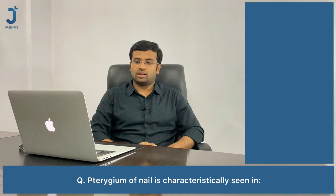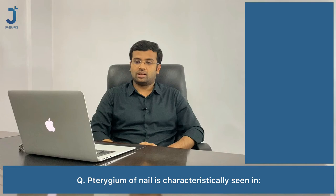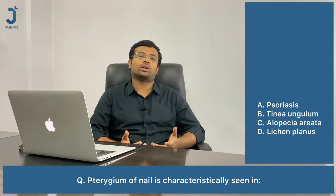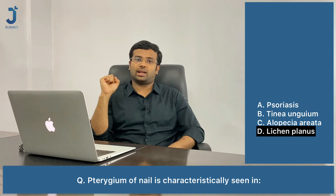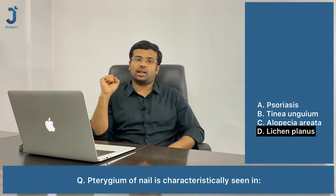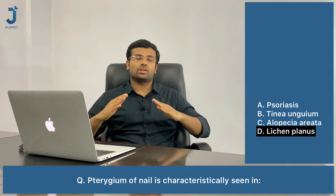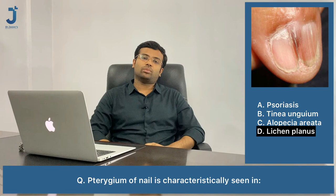Next question: pterygium of nails is characteristically seen in which condition? Options are psoriasis, tinea unguium, alopecia areata, and lichen planus. Pterygium is characteristic of lichen planus. The most common nail finding in lichen planus is thinning of the nails, and the most characteristic is pterygium — a wing-shaped extension of the nail.